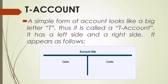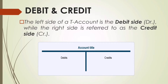The T-account: a simple form of account looks like a big letter T, thus it is called a T-account. It has a left side and a right side. You have the account title, with debit on the left side and credit on the right side. The left side of a T-account is the debit side or DR, while the right side is referred to as the credit side or CR.